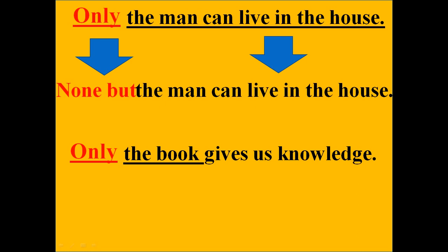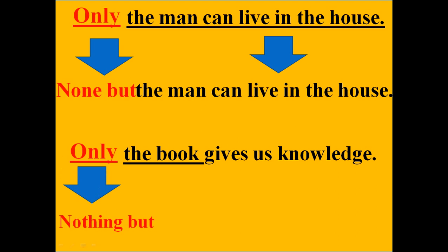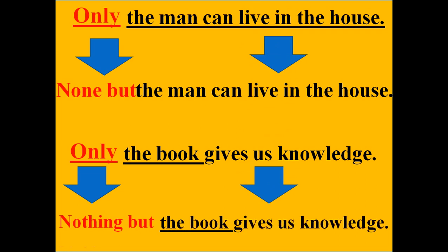Next sentence: Only the book gives us knowledge. Here there is also 'only,' and the subject is 'the book' — it is a material. So what will we use? We use 'nothing but' in place of 'only.' If the subject is a material, we use 'nothing but' at the first position of the sentence, and the other part also remains accurate. So remember: for a person subject we use 'none but,' and for a material subject we use 'nothing but.'